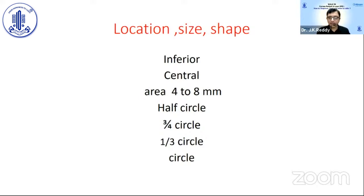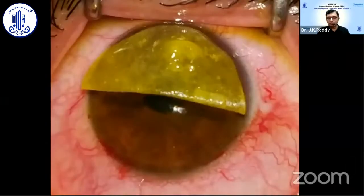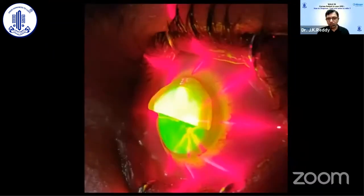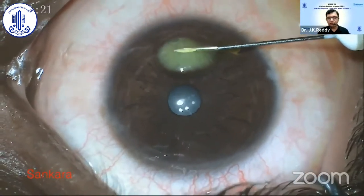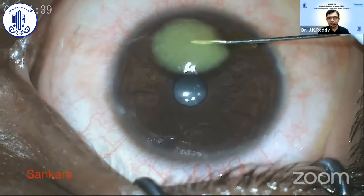The thickness graph given by Seiler can be used as a starting point and fine-tuned over time. Location, size, and shape are also taken into consideration. For inferior or central cones, I vary the irradiation area from 4 to 8 millimeters. I use half-circles, three-quarter circles, one-third circles, and full circles. For a half-lower involvement, I use a paper-cut glove paper soaked in riboflavin to cover the superior half — the flat cornea I don't want cross-linked — so the superior uninvolved portion is protected during irradiation.